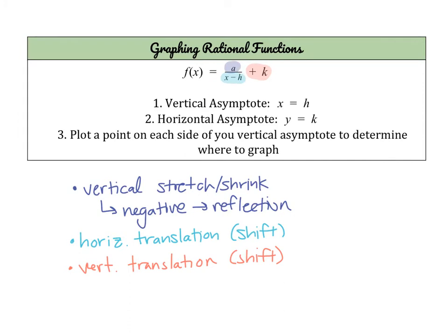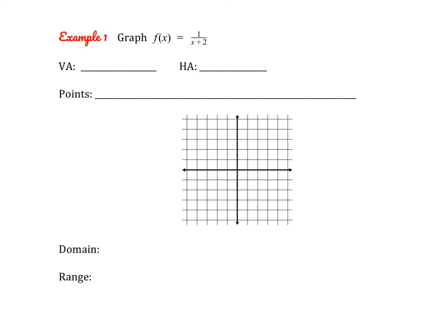We can generalize these transformations into rules for asymptotes. Our vertical asymptote is always at x equals h, because it shifts left or right with the rest of the graph. Our horizontal asymptote is at y equals k, because it shifts up or down with the rest of the graph. We can sketch both asymptotes as guidelines first, then plot at least one point on each side of the vertical asymptote to determine where our graph falls and get a more accurate sketch.